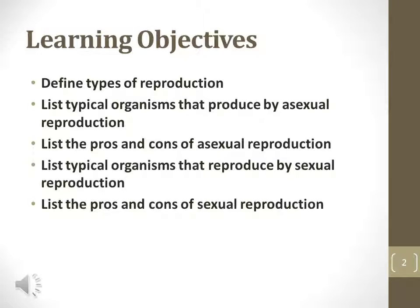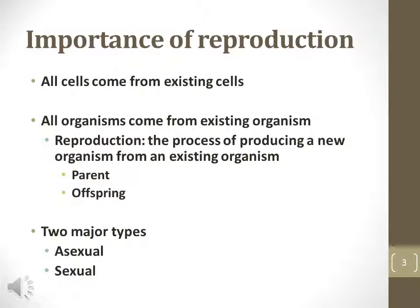Cells may divide asexually, where only one parent is needed to produce offspring, or sexually, when two parents are needed to produce offspring. Cell theory states that cells only come from other cells, therefore cell division is important for the reproduction of cells. Reproduction may mean simply asexual division of a parent cell into two identical daughter cells. This is common in many unicellular prokaryotes.